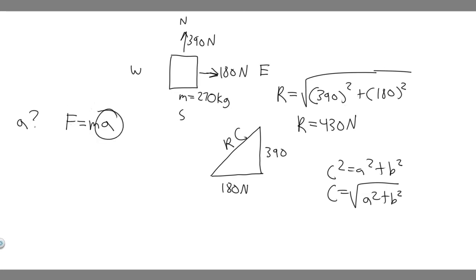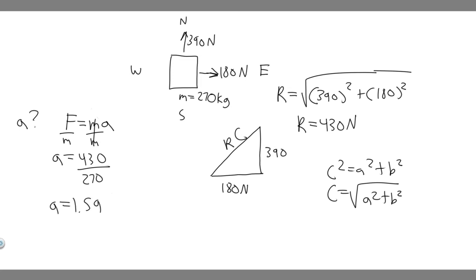Now we have F and we know m, so we can solve for acceleration. a = F/m, so divide both sides by mass: a = 430 divided by 270, which equals approximately 1.59259 — so about 1.6. The units are meters per second squared, because we used newtons and kilograms. So we now have the magnitude of the acceleration — that's your first part.